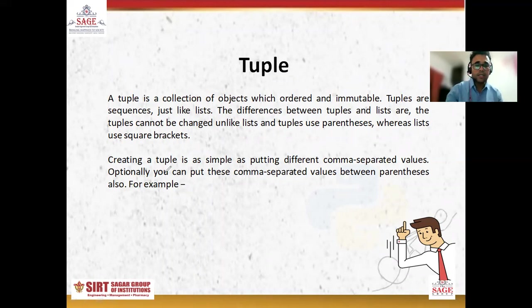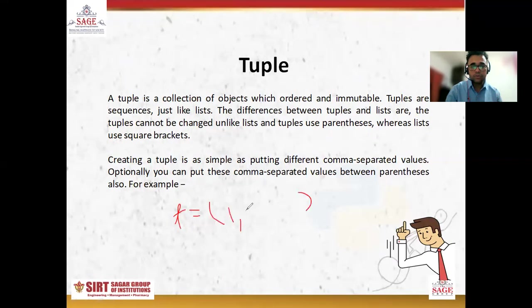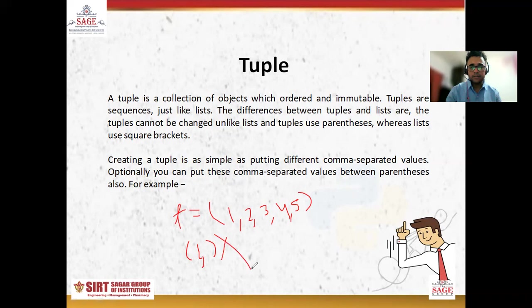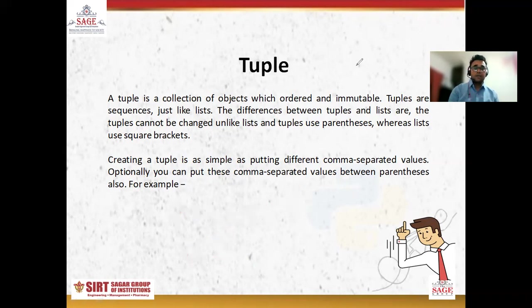Optionally you can put comma-separated values between parentheses. For example, T is a tuple with elements 1, 2, 3, 4, 5. If you want to create an empty tuple, that is also possible. The wrong way to declare a tuple with a single element is writing just '1' — that is incorrect. Adding only a comma after the value is also a wrong statement.